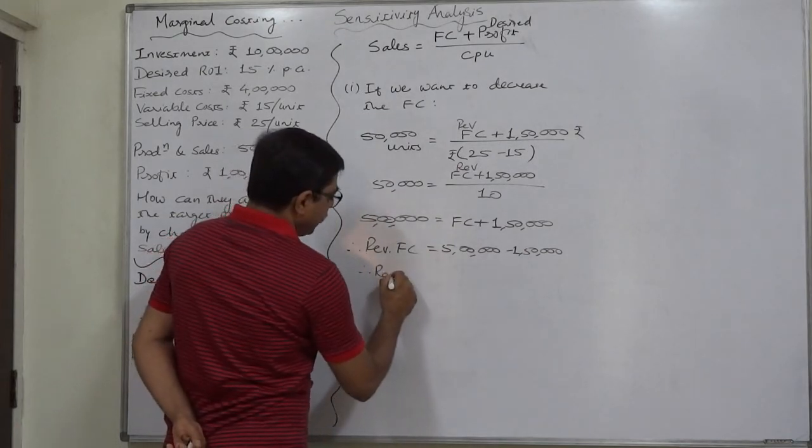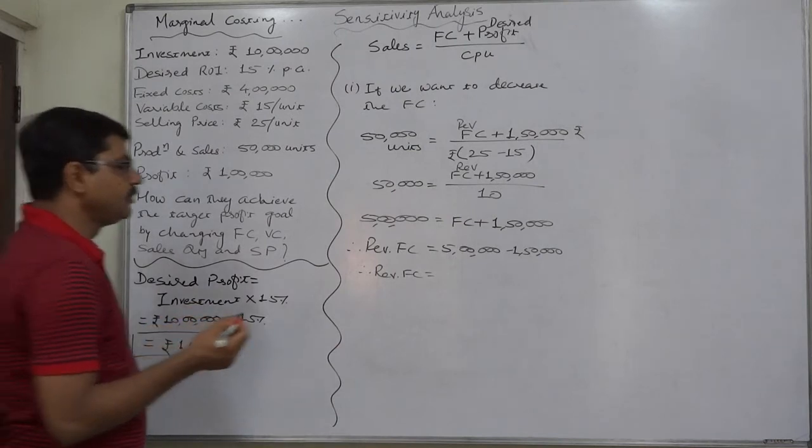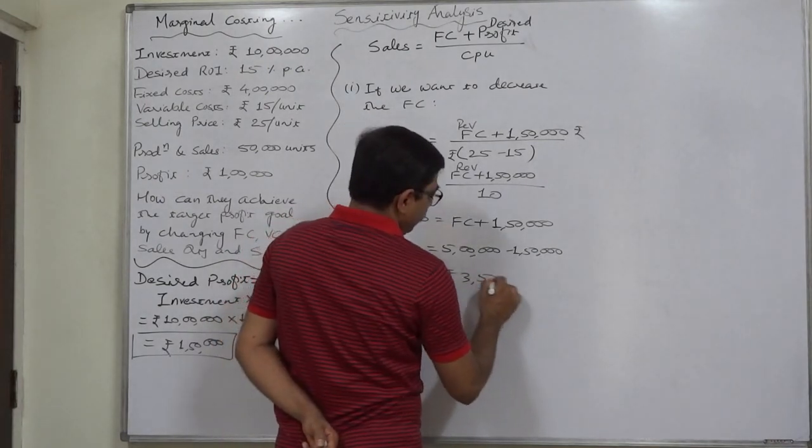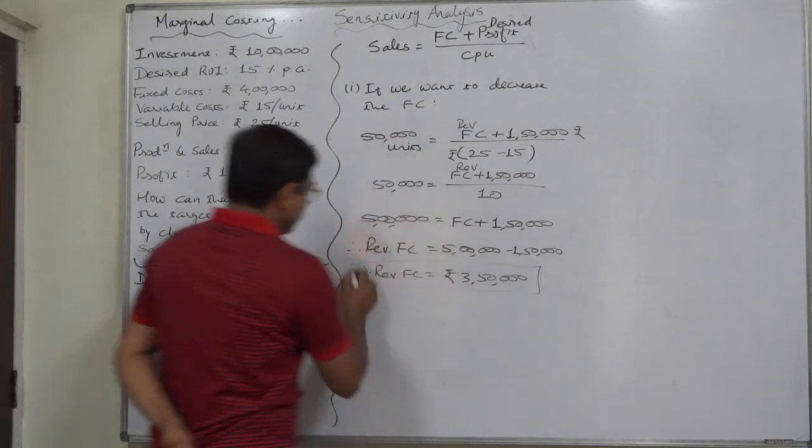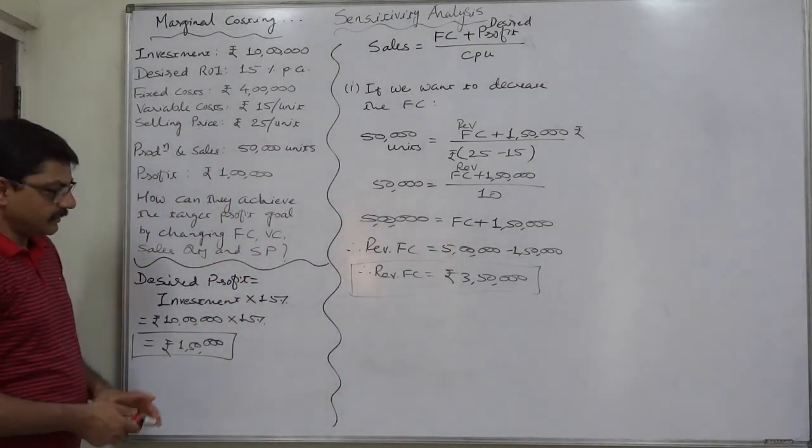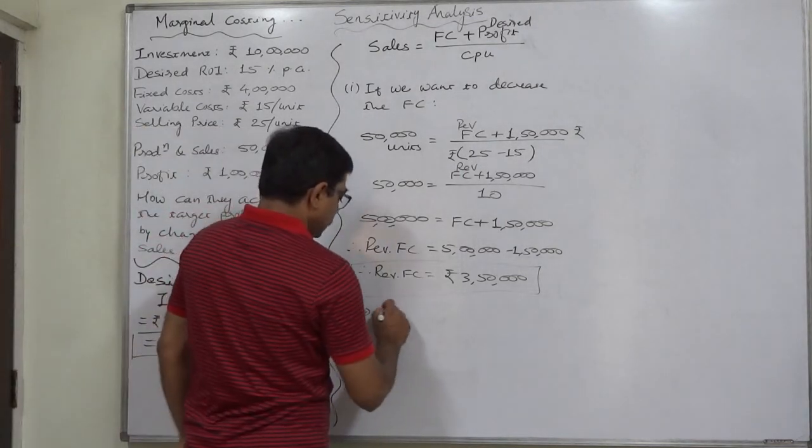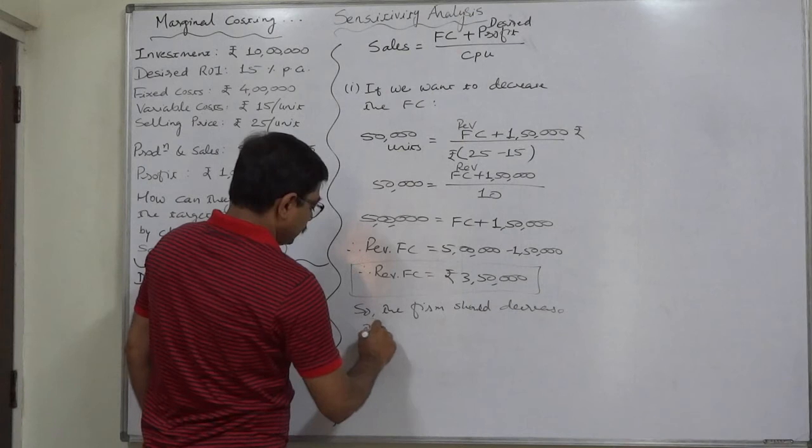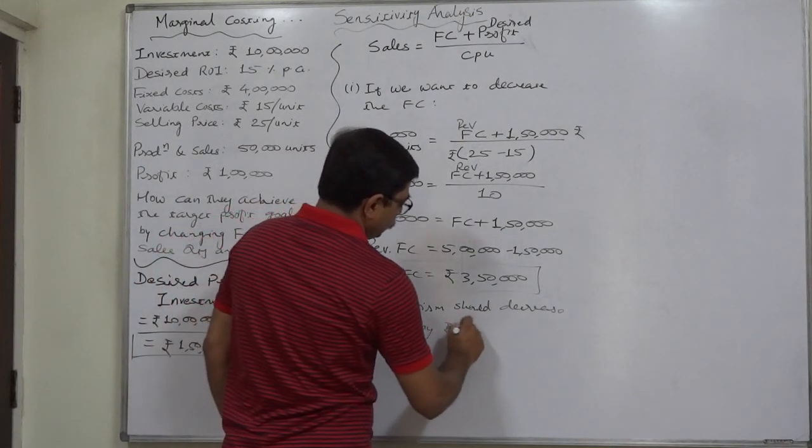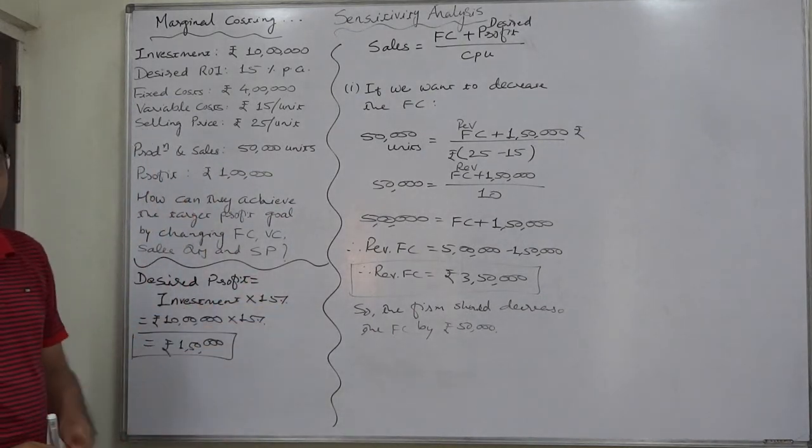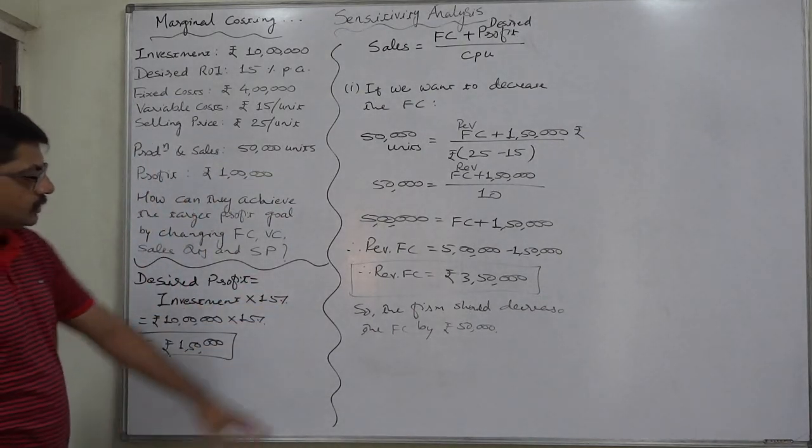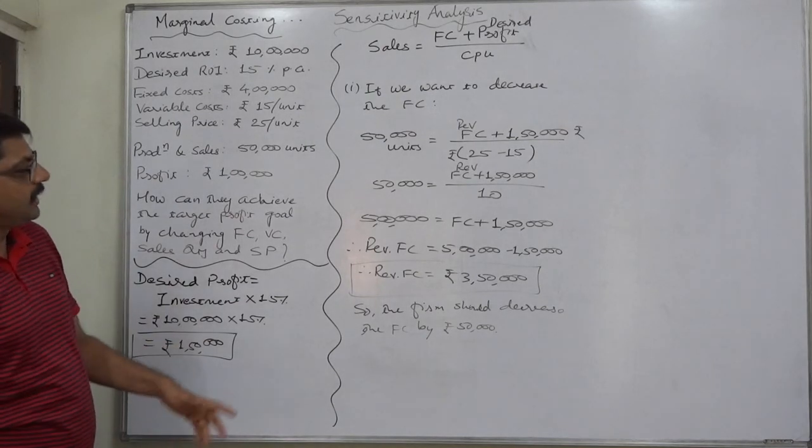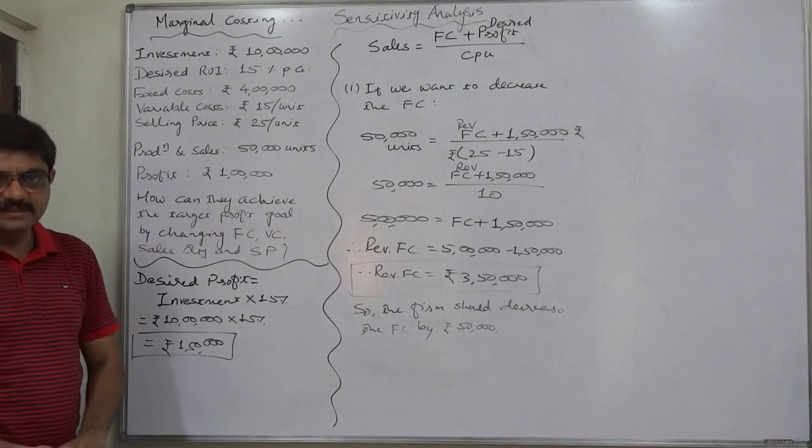Now we can say that if the company succeeds in reducing the fixed cost to rupees 3 lakh 50,000 from rupees 4 lakh, the profit can be rupees 1 lakh 50,000, that is 15% of the investment. So the firm should decrease the fixed cost by rupees 50,000. In this way, other factors can be considered for the purpose of changing. This is the first point of sensitivity analysis. In the next lecture or next coming 3 to 4 lectures, we are going to discuss the change in all other factors. Thank you very much.